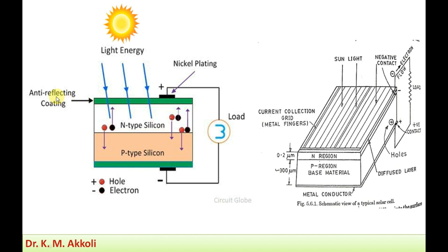At the top, an anti-reflecting coating is provided so that sunlight falling on it will not be reflected but will be absorbed. When sunlight falls on the N-type silicon material in the form of photons, it will absorb the radiation energy. The radiation energy in the form of photons falls on and is absorbed by the N-type silicon material.